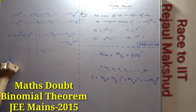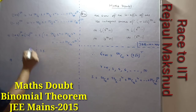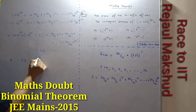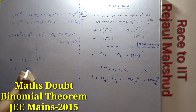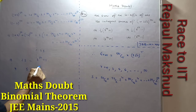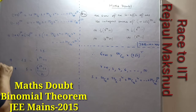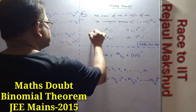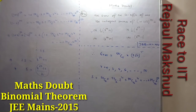So twice the required sum equals (1+√2)^50 + (1-√2)^50 = 3^50 + 1. Therefore the required sum is (3^50 + 1)/2. This is the exact solution to the problem.